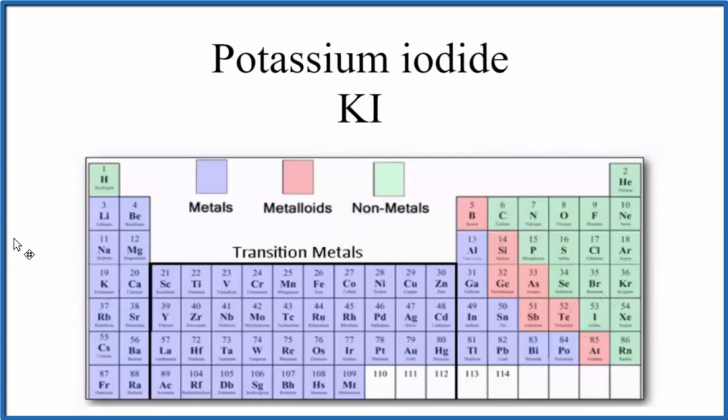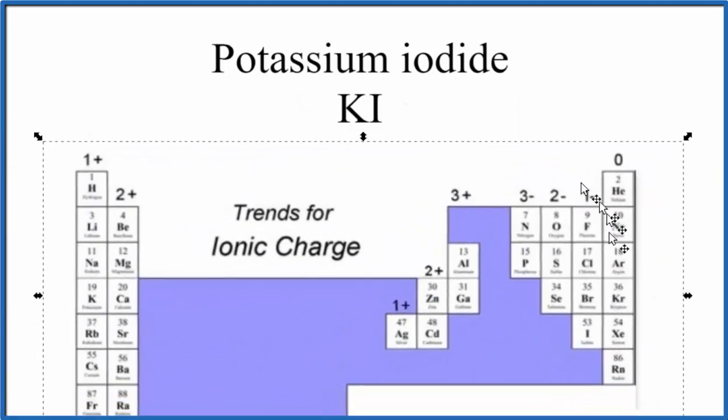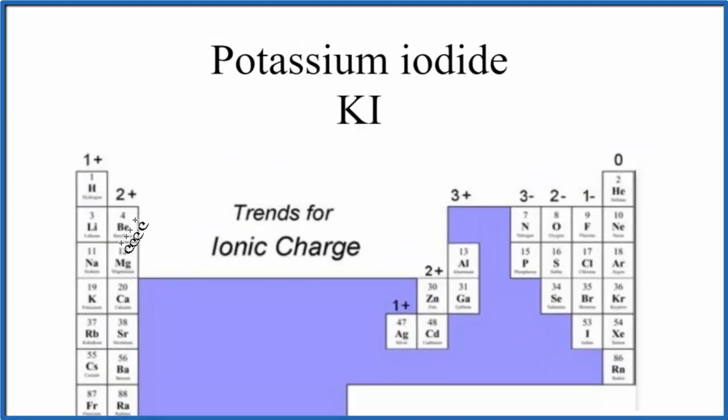Because it's an ionic bond, we could look at the periodic table here. You'll see that the potassium in group 1, right here, that forms 1 plus ions.